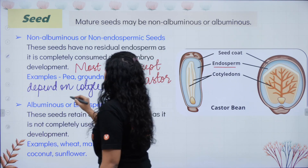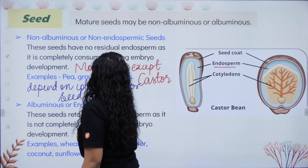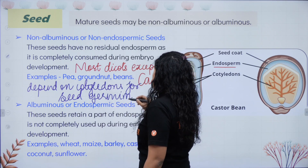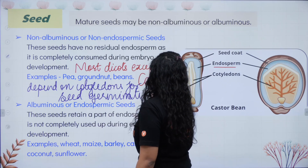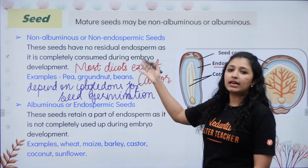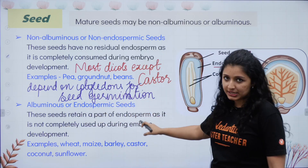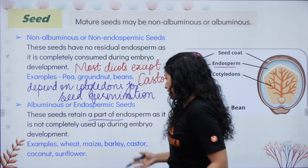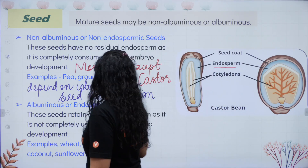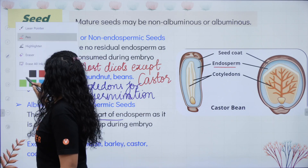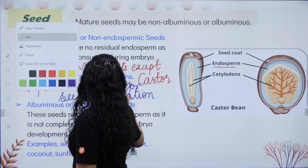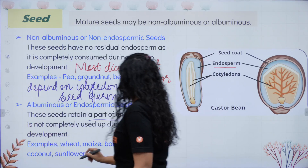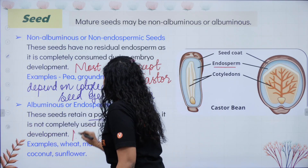The endosperm is consumed and the food is stored in the cotyledon for seed germination. Endospermic seeds, also called albuminous seeds, retain a part of the endosperm — it is not completely used up. Examples include wheat, maize, barley, castor, coconut, and sunflower. Here we have an exception: castor is a dicot but it is endospermic. Mostly monocots are endospermic seeds.